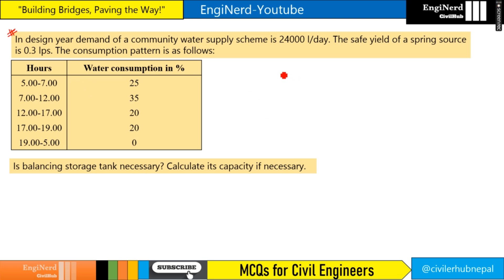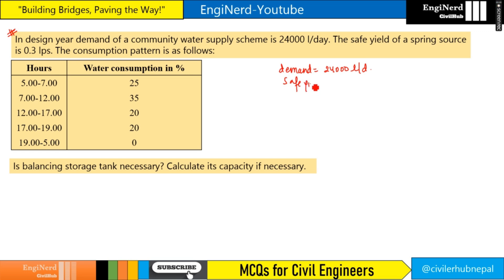So the demand is 24,000 liters per day, and the safe yield from the spring source is 0.3 LPS.